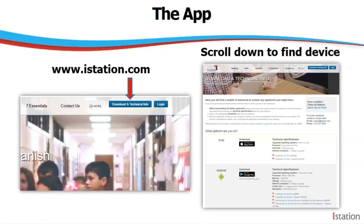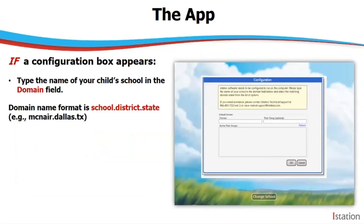When you get to istation.com, you will see a blue bar that says download and technical information. Click on that, scroll down, and find your device and it will walk you through the installation process. If a configuration box appears, type in the name of your child's school in the domain field. Leave the peer group blank and then click OK.